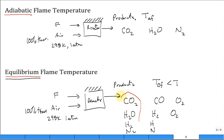So these are like the primary products, but you get some others because of dissociation.